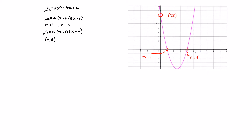To find a, we replace all the x's by zero and all the y's by eight. Replacing y by eight and x by zero gives us eight equals a times zero minus one times zero minus four, which leads to eight equals a times negative one times negative four.